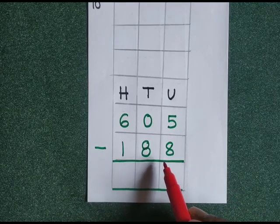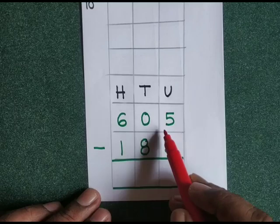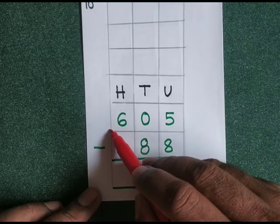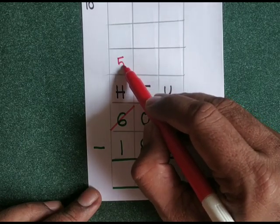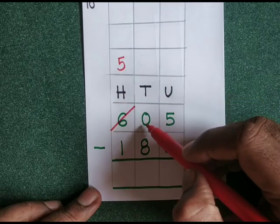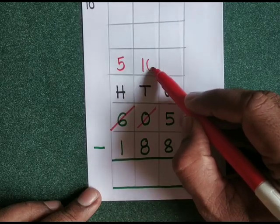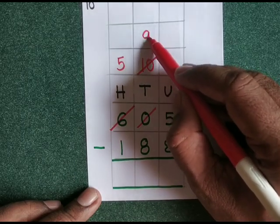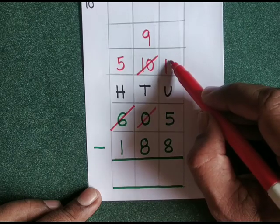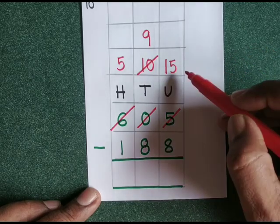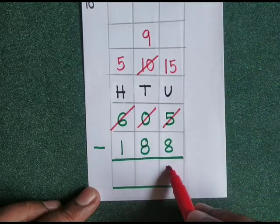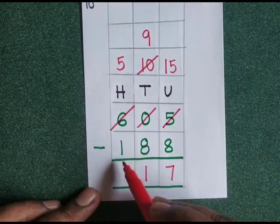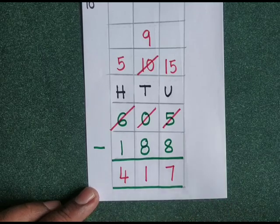605 minus 188. 5 minus 8 — we can't do, and we can't borrow from the tens place because 0 is there. So we go to the hundreds place: 600; borrow 100, it becomes 500. That 100 means 10 tens; from 10 tens borrow 1 ten, leaving 9 tens. That 1 ten means 10 units plus 5 units gives 15 units. 15 minus 8 is 7. 9 minus 8 is 1. 5 minus 1 is 4. The answer is 417.